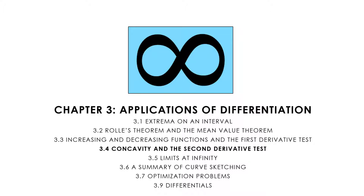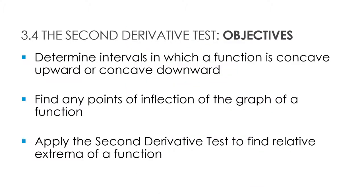Now we want to look at the second derivative test, which talks about concavity. So we have three objectives: determine intervals on which a function is concave up or down, find any points of inflection, which are like critical values but second derivatives instead, and apply the second derivative test to find the relative extrema.